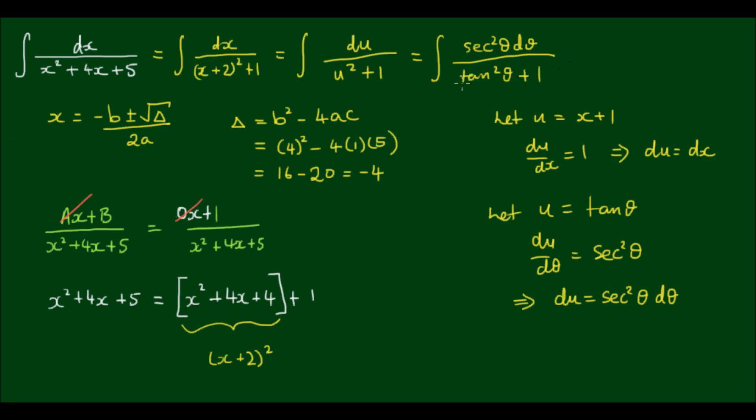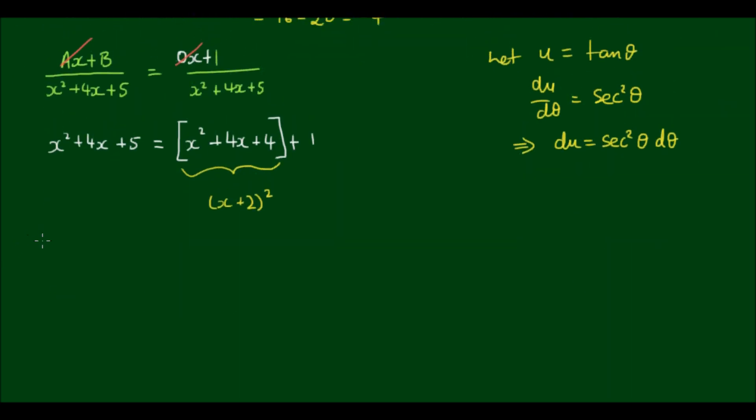And now tan squared theta plus 1 is equal to sec squared theta. So the integral of sec squared theta on sec squared theta by d theta. And of course these sec squared thetas cancel out. And all we have remaining is the integral of d theta. And this of course integrates to theta plus an integration constant c.